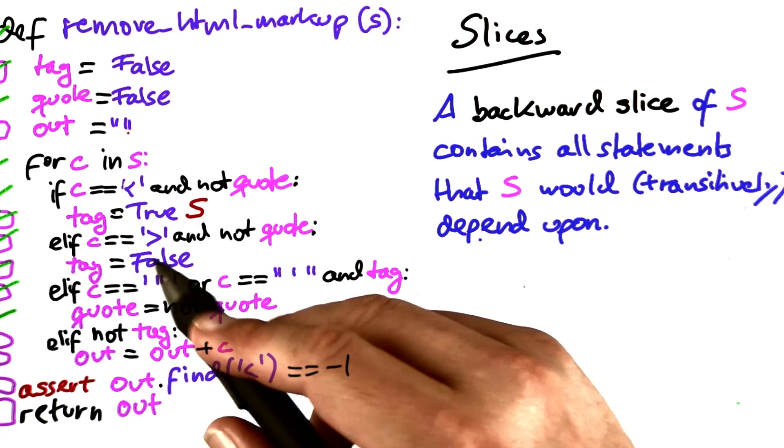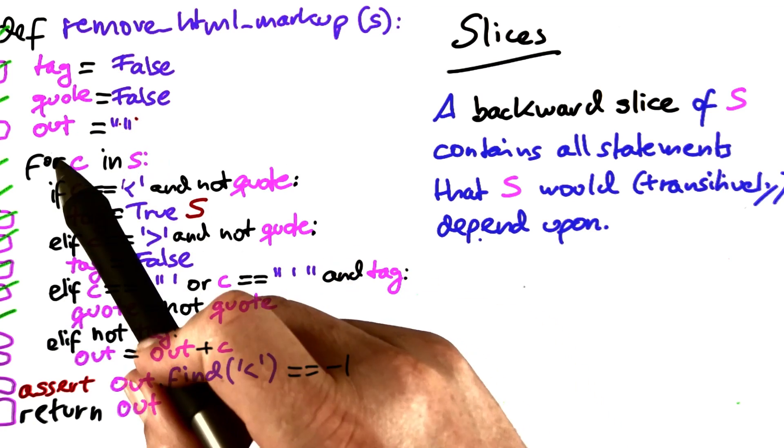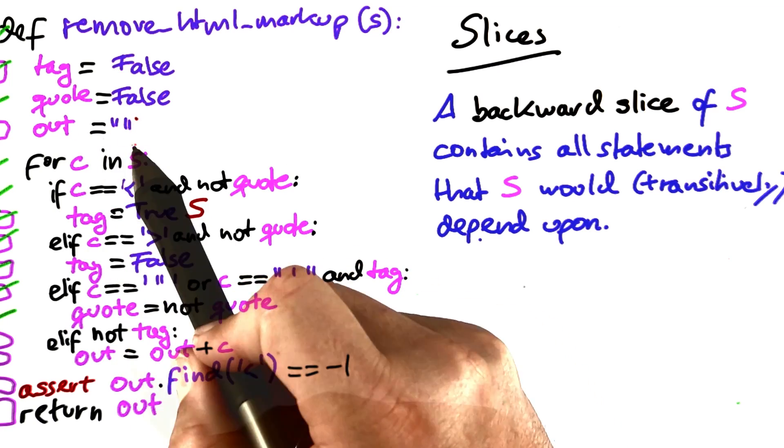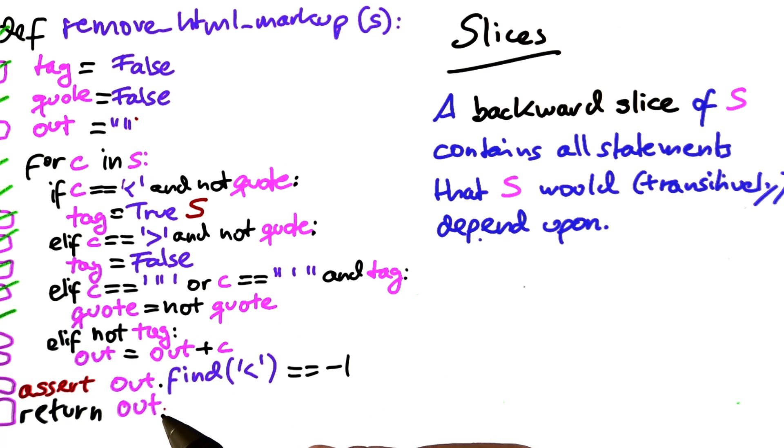What you see in here is the statements that are not part of the backwards slice are statements that refer to out, setting out, checking out, and returning out.